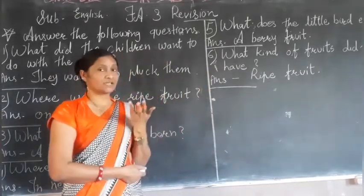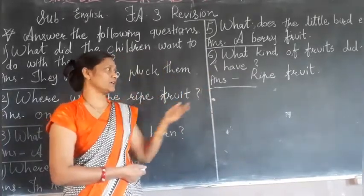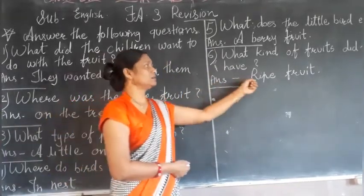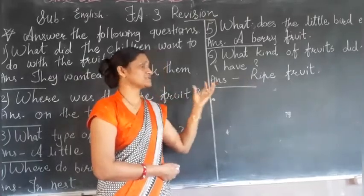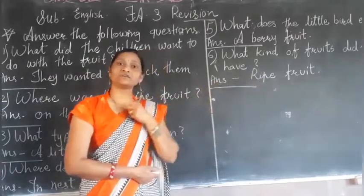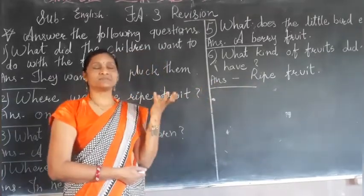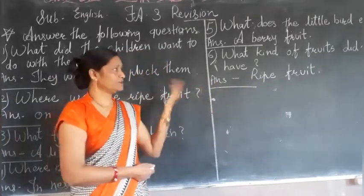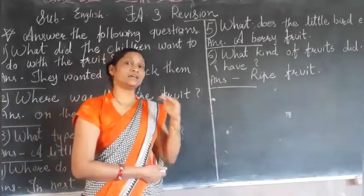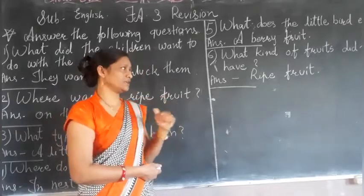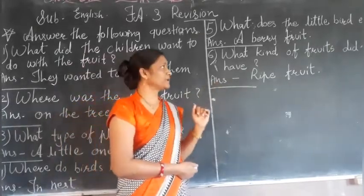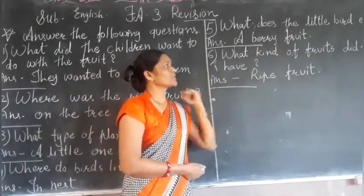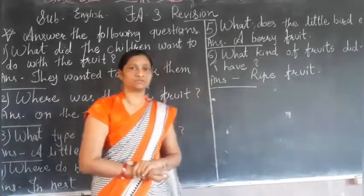What kind of fruit did the tree have? Tree के ऊपर कैसे fruits थे? A ripe fruit. Ripe means ready to eat — जो ऐसे fruits होते हैं जो खाने के लिए ready हों. Fruits कहाँ पर थे? Tree के ऊपर.